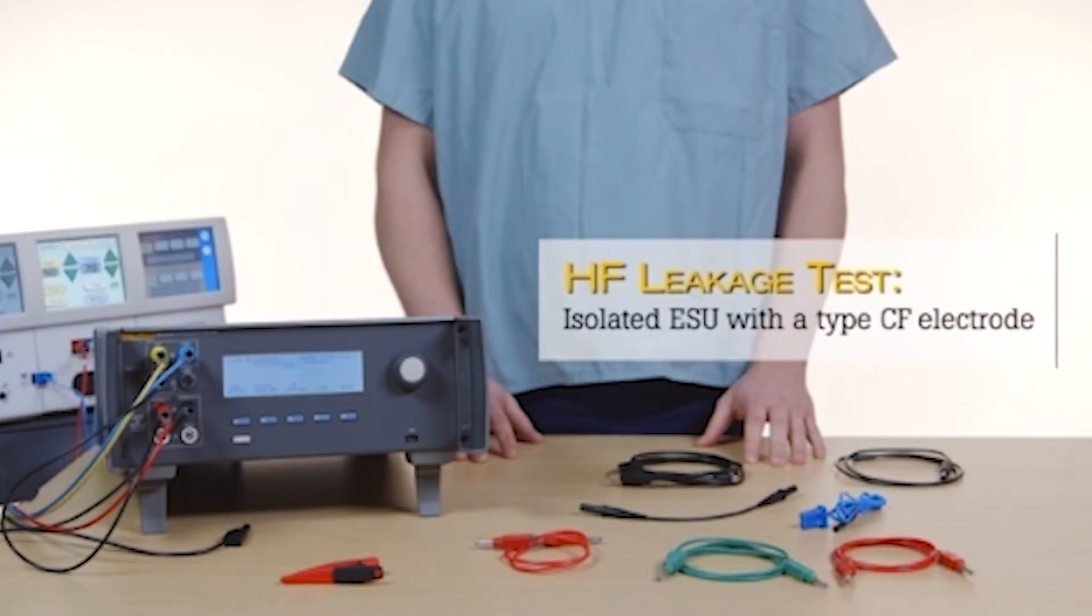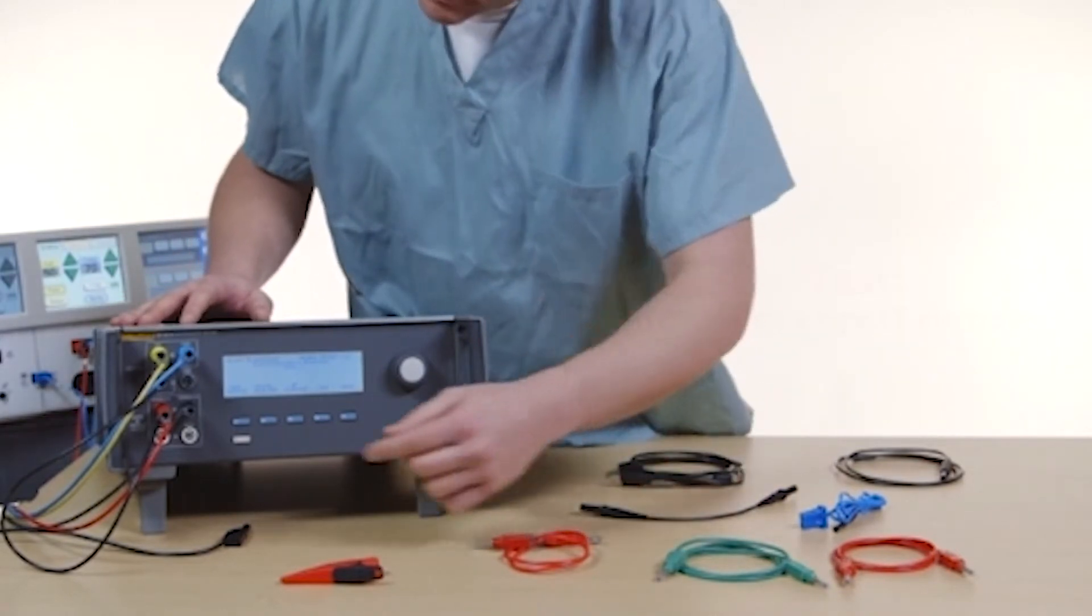Here's how to do an HF leakage test for an isolated ESU with a type CF active to earth electrode.